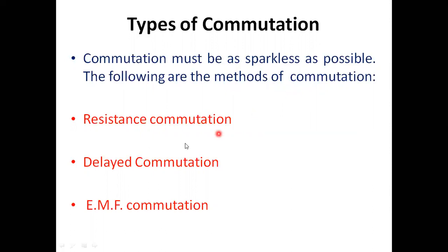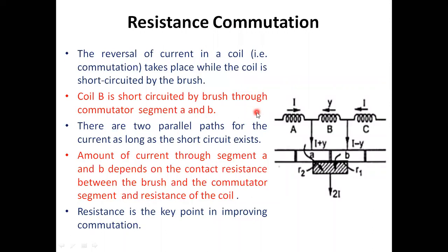There are a number of methods: resistance commutation, delayed commutation, and EMF commutation. In resistance commutation, the reversal of current in the coil takes place when the coil is short-circuited by the brush. The brush makes coil B short through segment A and segment B. Coil B is short-circuited by brush A and B in a parallel path. There is a local circuit with two parallel paths.